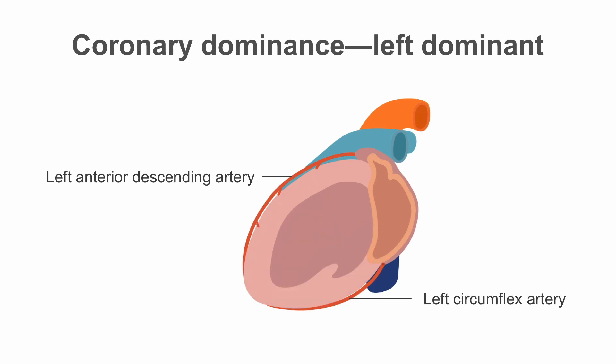Here we can see that the patient has left coronary dominance, where the PDA supplying the inferior part of the heart is supplied by the left circumflex artery. A smaller proportion of patients have left-sided coronary dominance, and when present the right coronary artery is usually a small vessel.